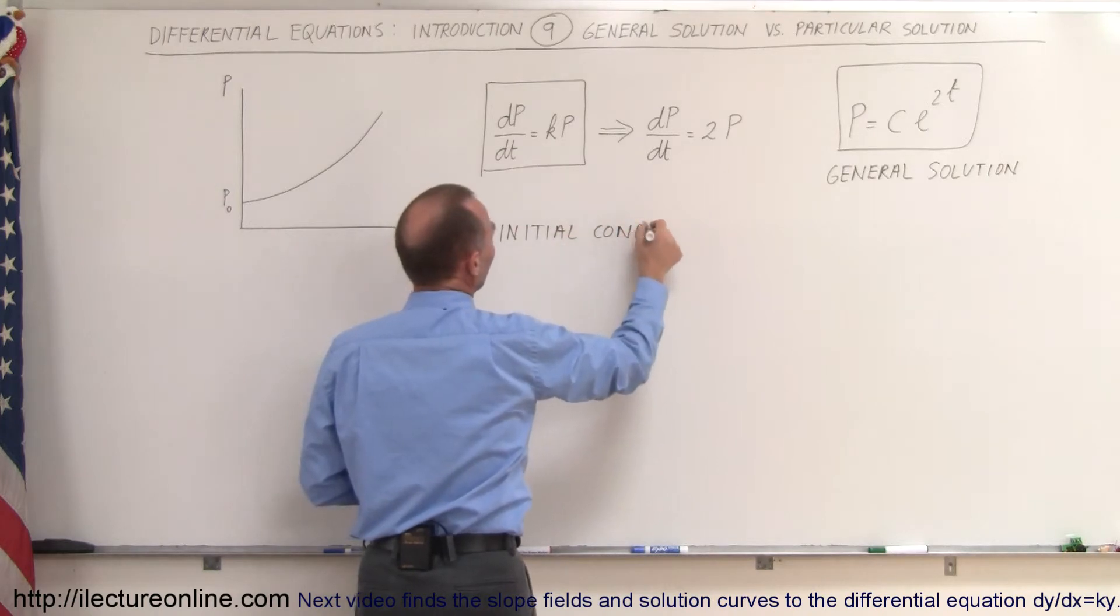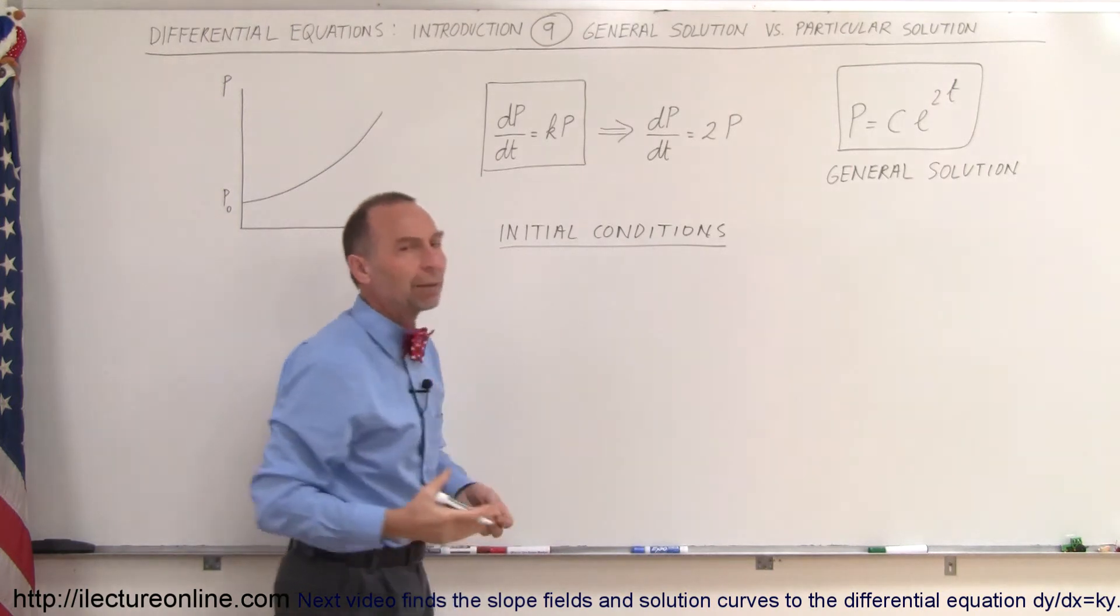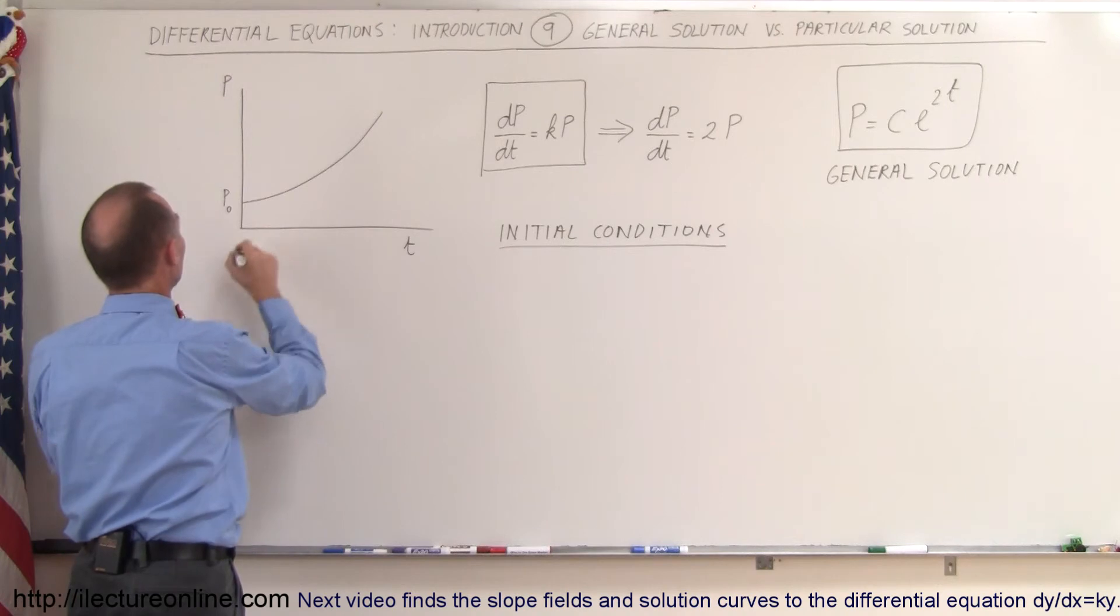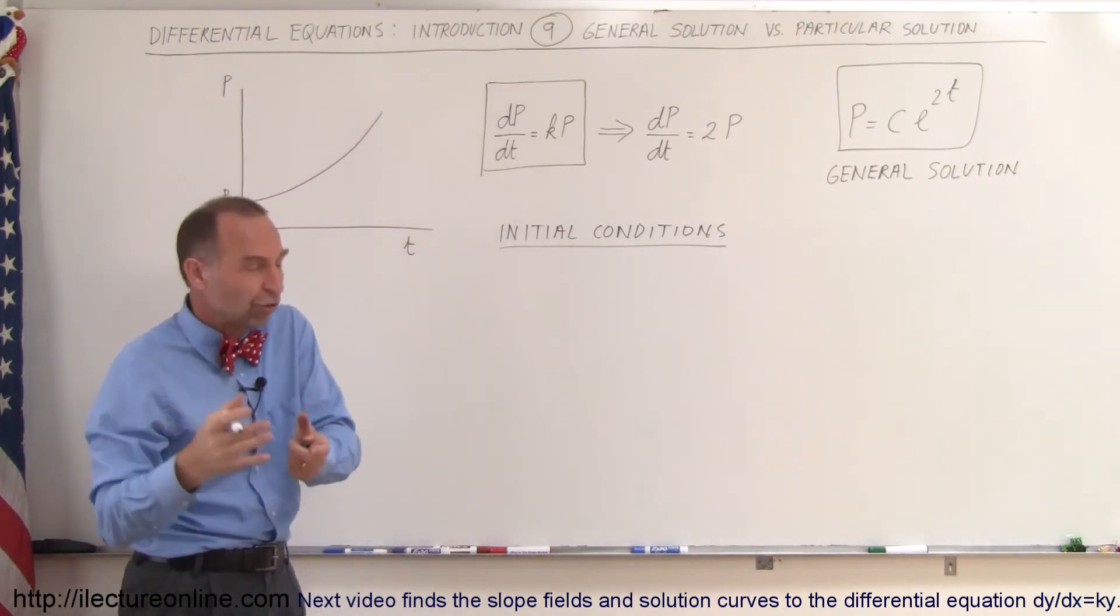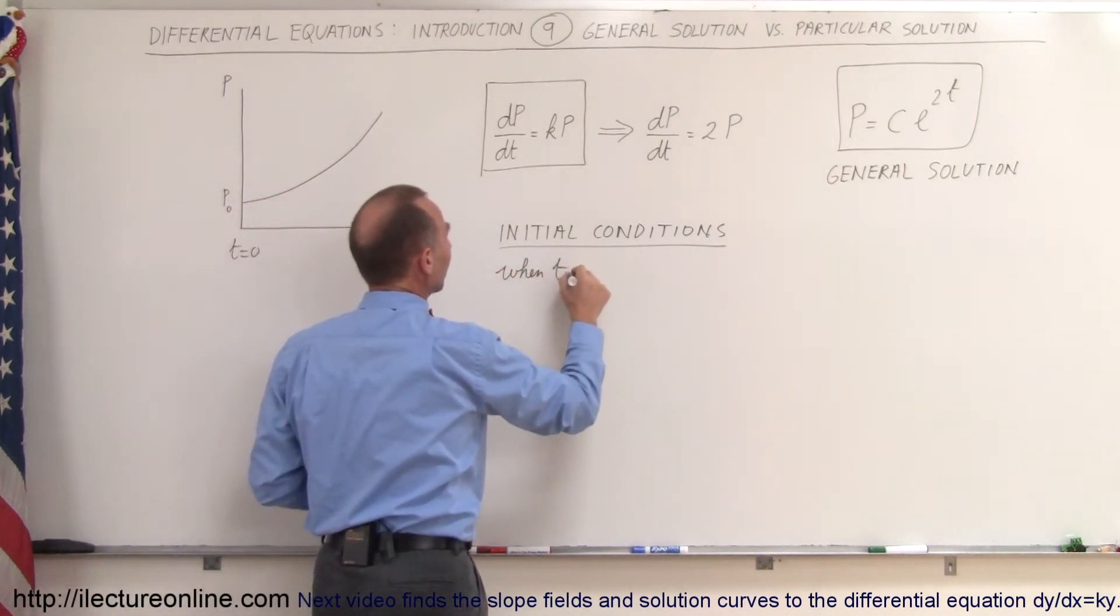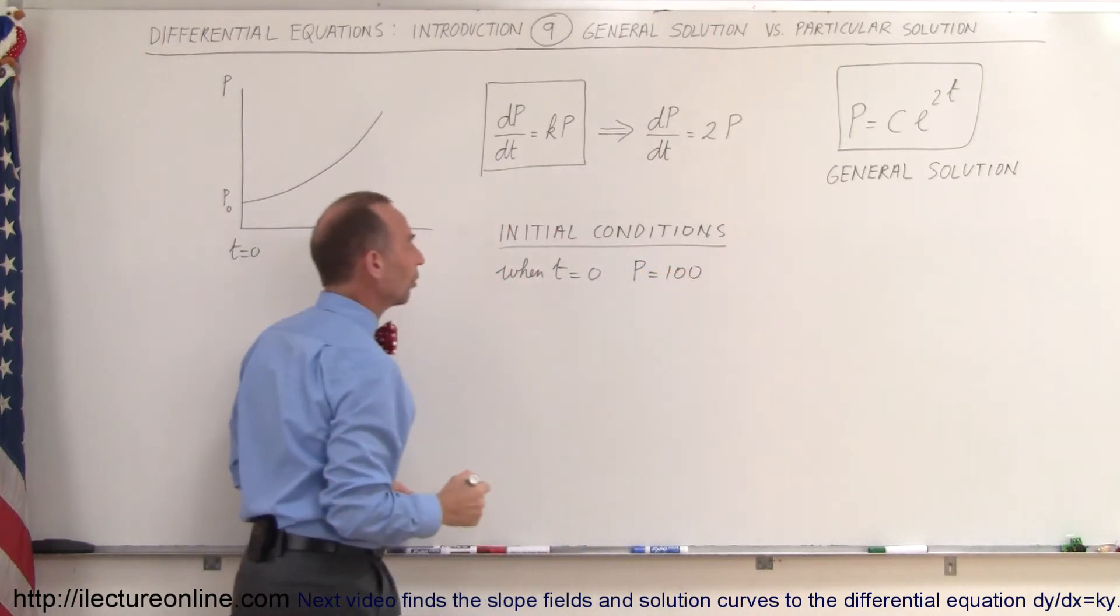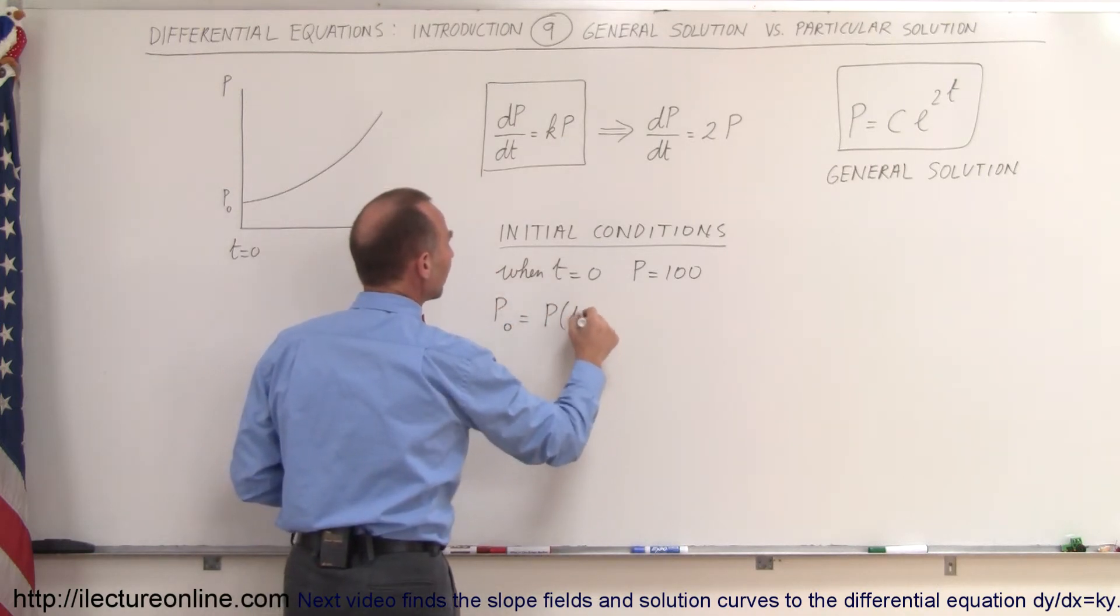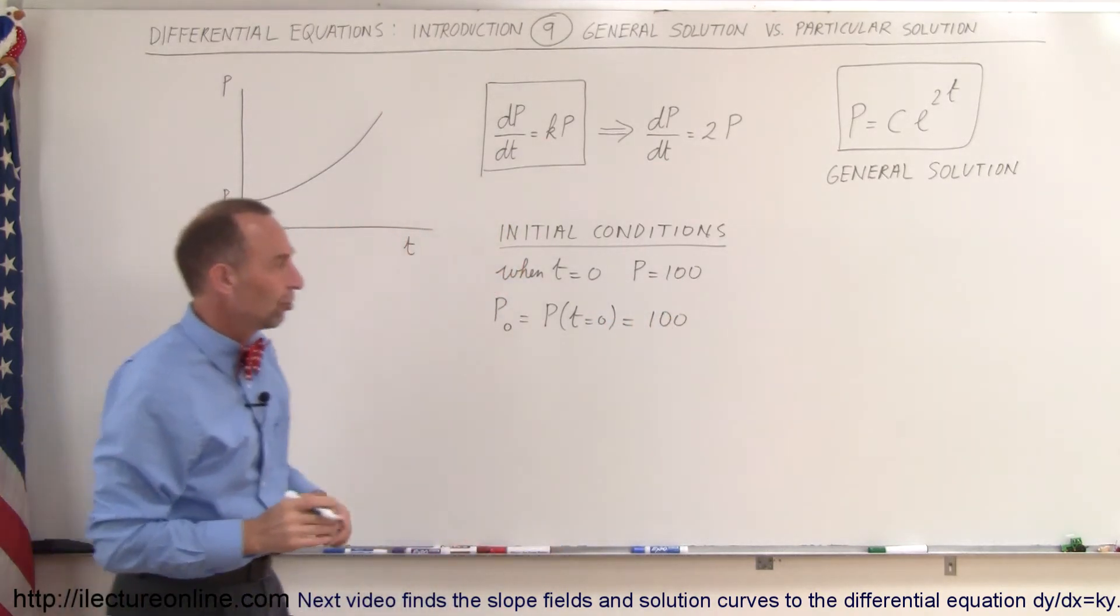And the reason why we call them initial conditions is because typically it is at the beginning of the problem. And since we calibrate the beginning of the problem where t is equal to 0, so in this case t is equal to 0, the initial conditions involve what happens or what is the situation when the time is equal to 0. So when time is equal to 0, let's say that the population was equal to 100. So that means that p(0), which is equal to p when t is equal to 0, is equal to 100. And that will allow us to solve for c.